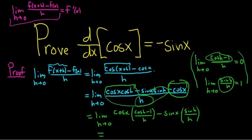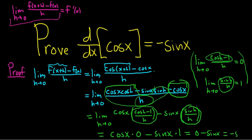So this is equal to, well, this limit is 0. So you get cosine x times 0 minus sine x. And this limit here is 1, so times 1. So that's 0 minus sine x. So that's minus sine x. And that's the proof.